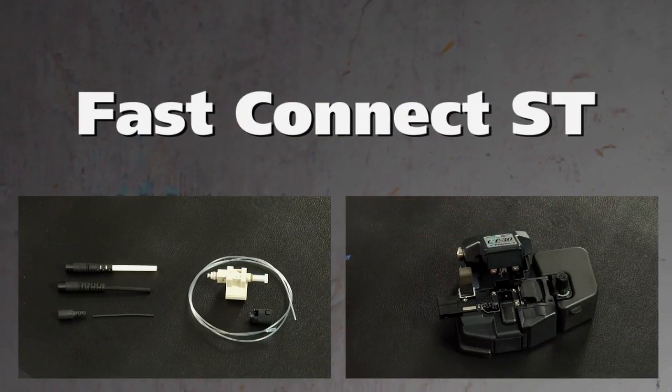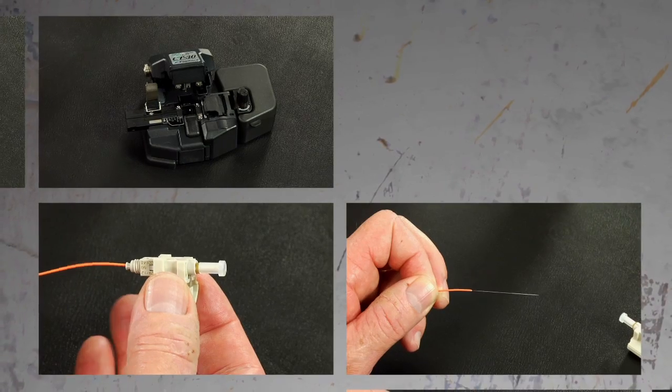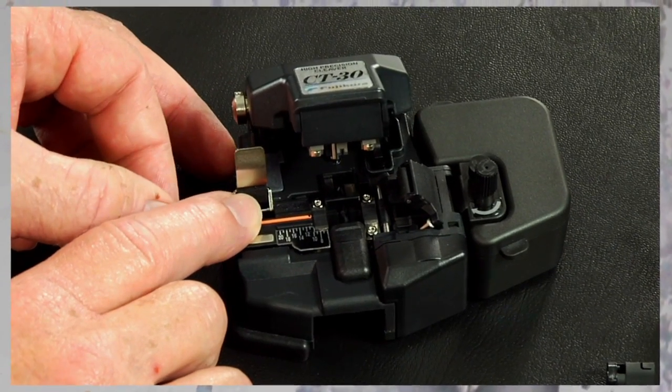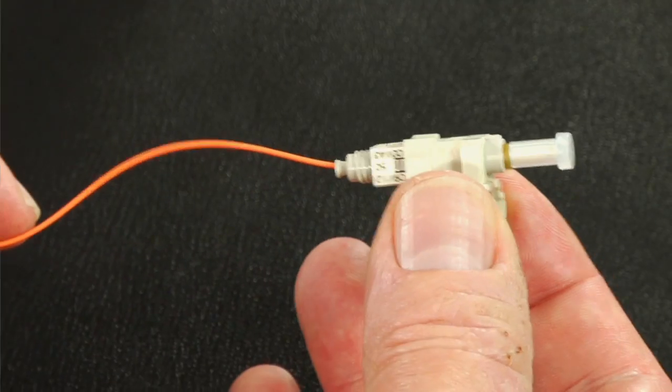Fast connectors. AFL's fast connectors are pre-polished field installable connectors that eliminate the need for hand polishing in the field. Precision mechanical alignment ensures low loss with a proprietary gel.